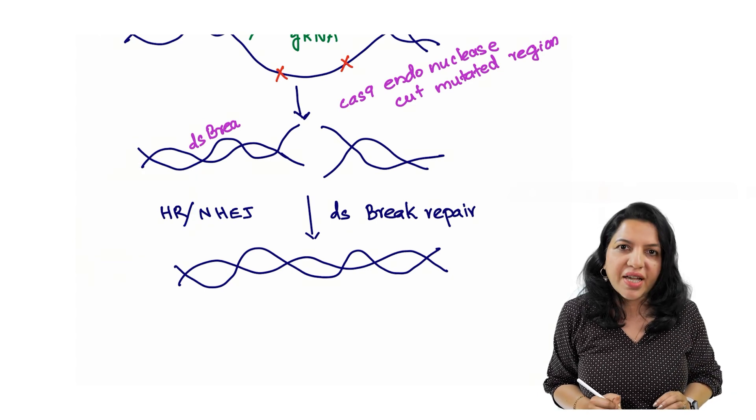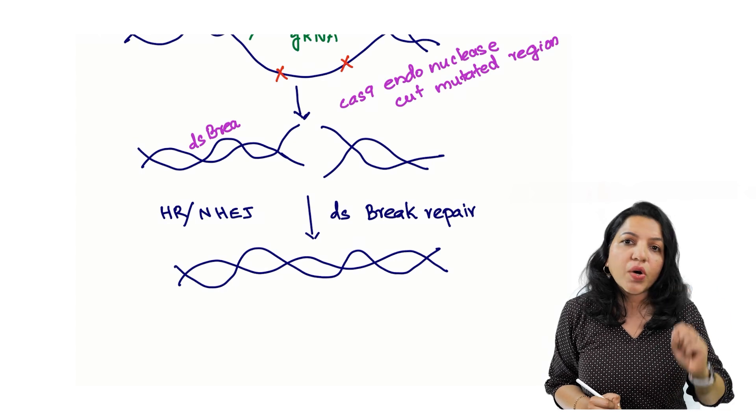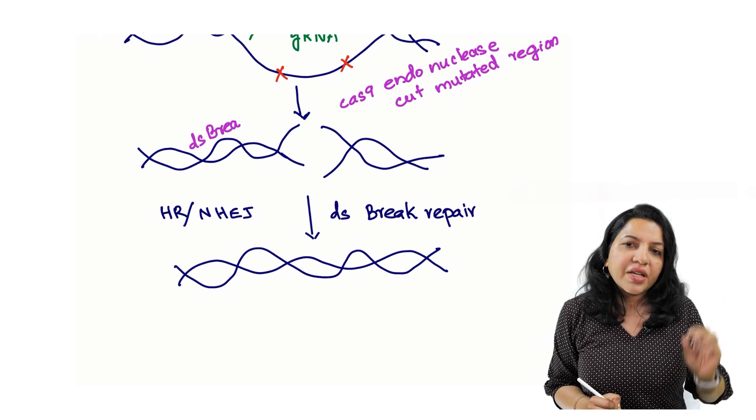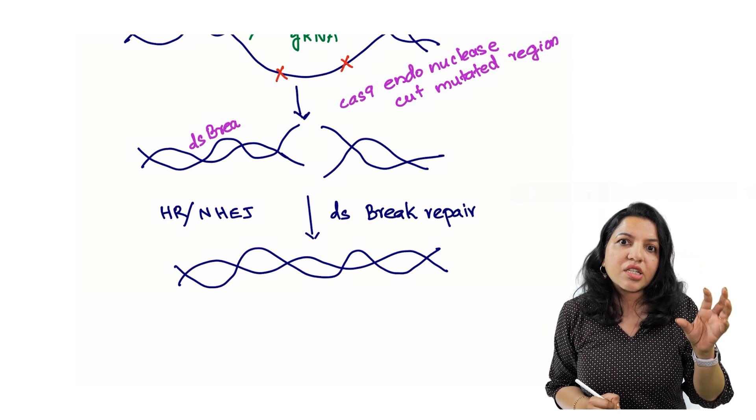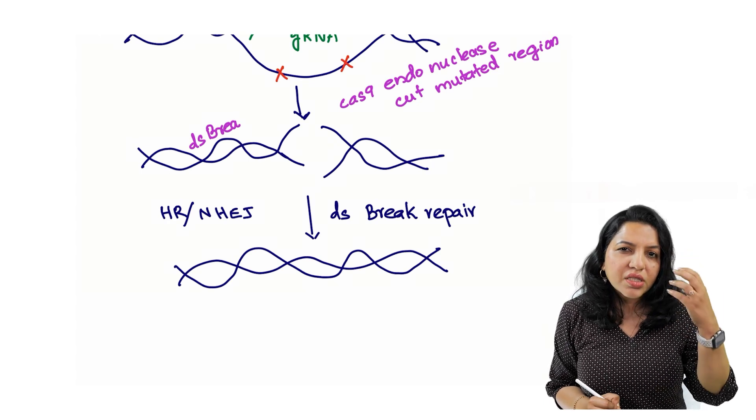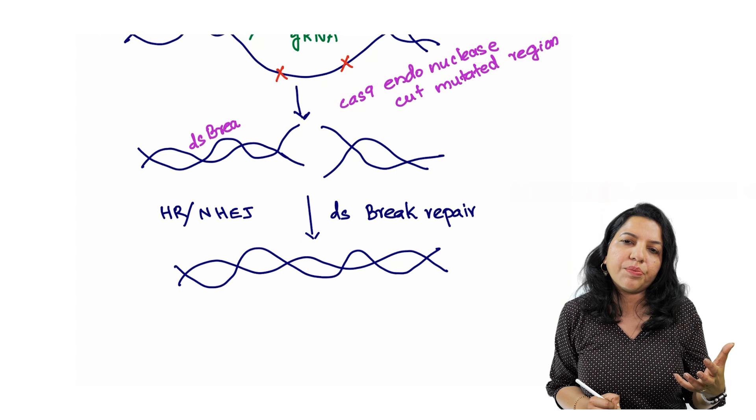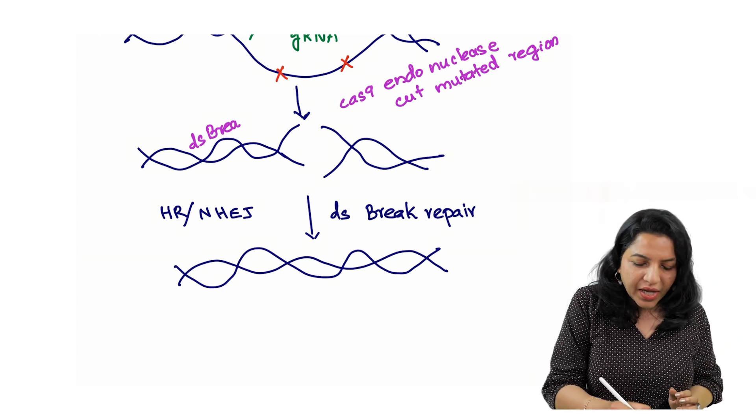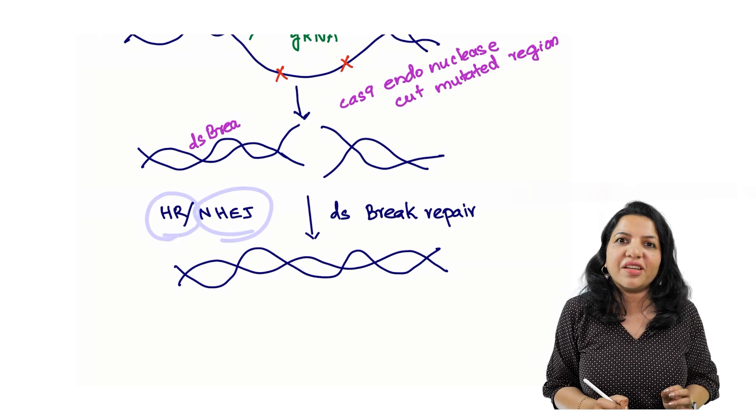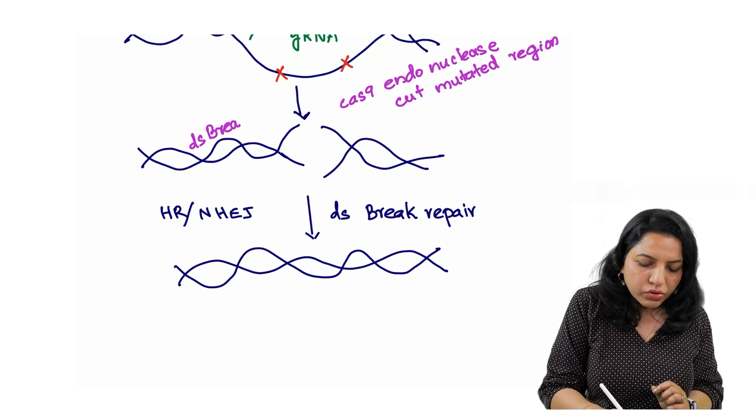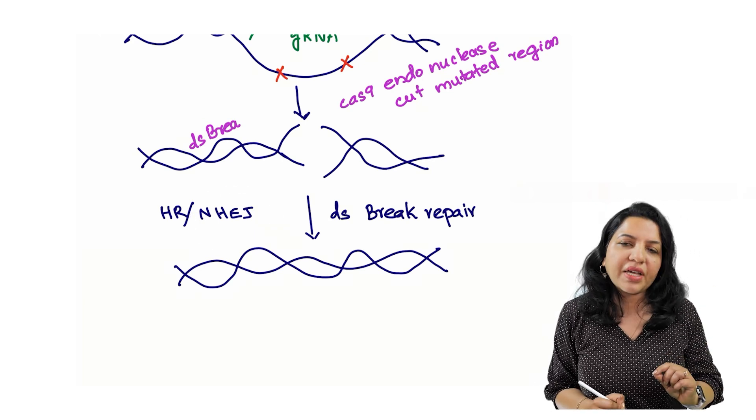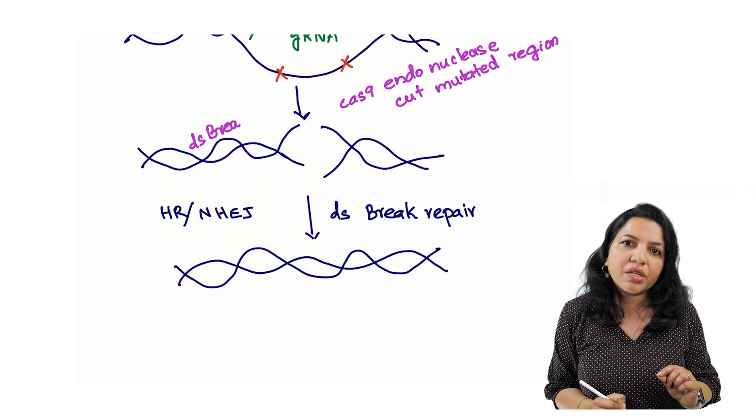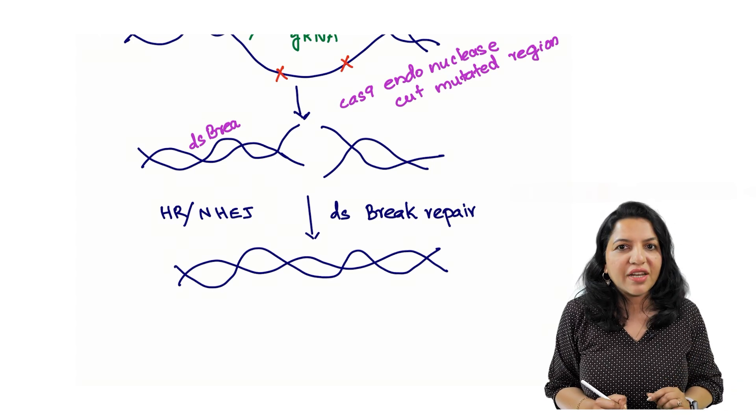So that is about the CRISPR-Cas9 system. There was one confusion in one exam. The CRISPR-Cas9 system was asked: it is correcting the double-stranded break repair using which mechanism? In the options, both HR and NHEJ were there. Then what is the answer? You should choose NHEJ because in humans, the most common mechanism to correct the double-stranded break repair is non-homologous end joining.